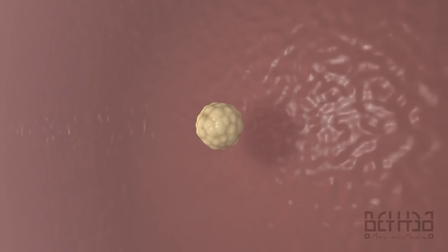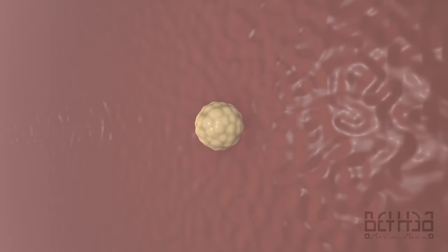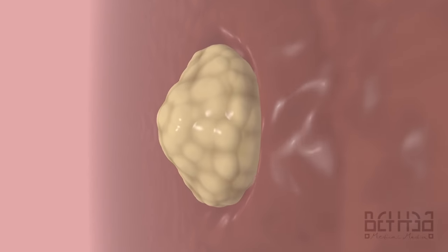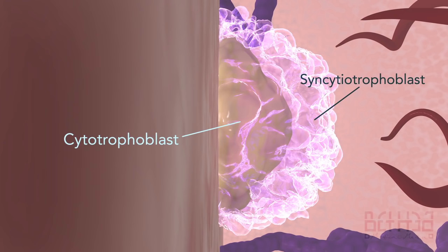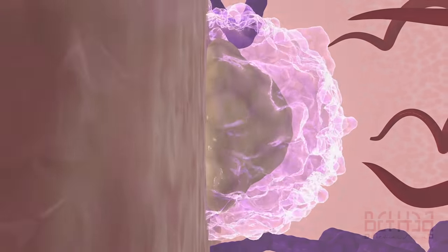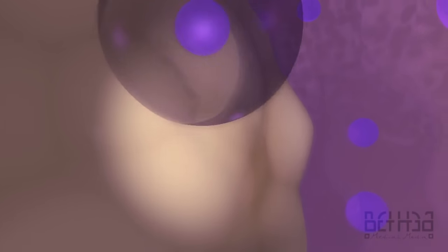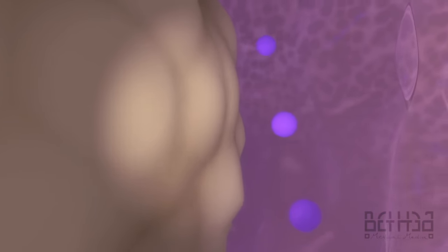Development of the placenta begins during implantation. When the blastocyst adheres to the endometrial epithelium, trophoblast cells differentiate into an inner cytotrophoblast layer and an outer syncytiotrophoblast layer. As the cytotrophoblast proliferates, newly formed cells migrate into the syncytiotrophoblast and lose their cell membranes, forming a rapidly growing multinucleated mass.